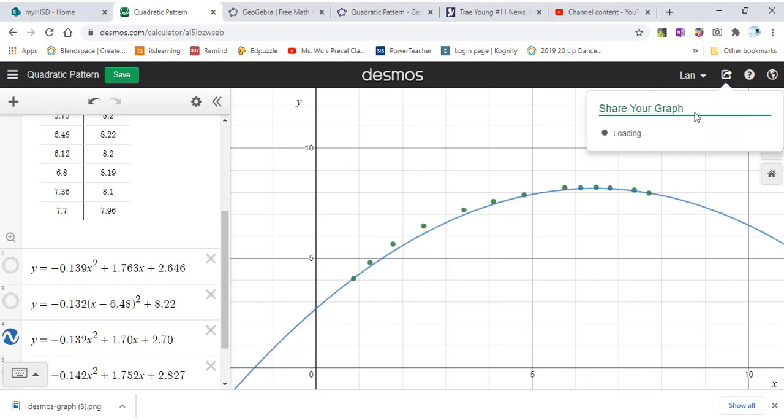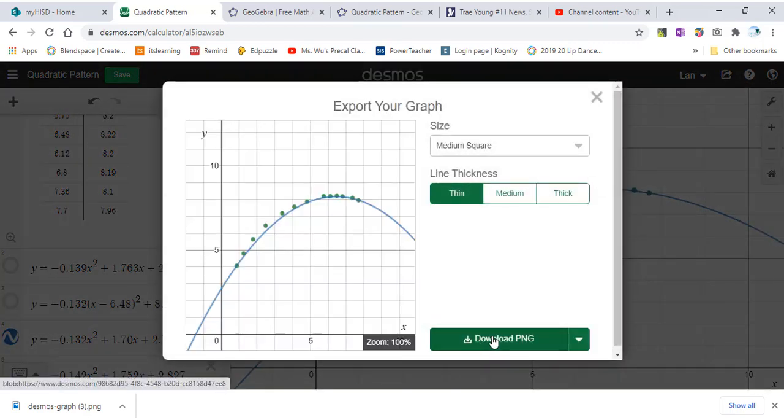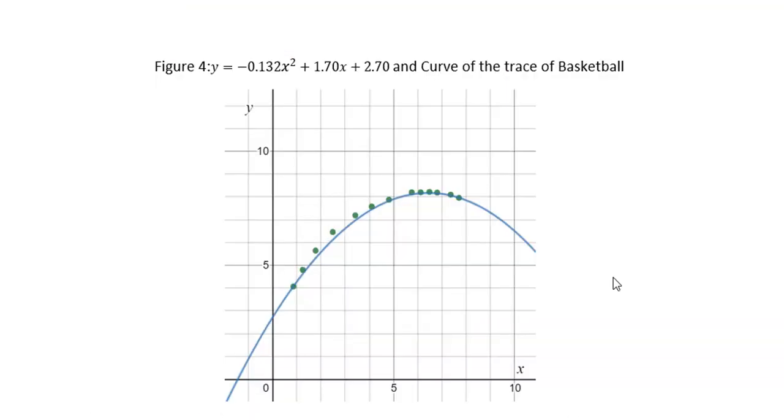I will download the image and copy to the Word document. Now I got Figure 4: y = -0.132x² + 1.70x + 2.70, the equation given by derivative method and the curve of trace of the basketball.